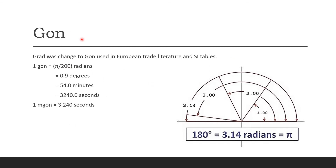The gon is a new unit — grad was changed to gon especially in European trade literature and SI tables. One gon equals pi divided by 200 radians, 0.9 degrees, 54.0 minutes, and 3240 seconds. One milligon is 3.240 seconds. This is just showing you how 180 degrees equals 3.14 radians, which is pi.